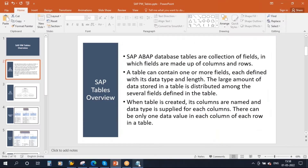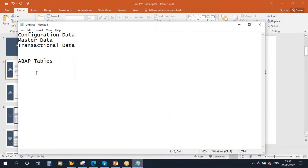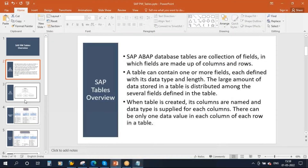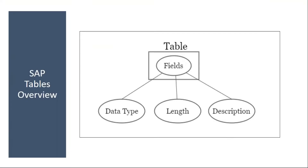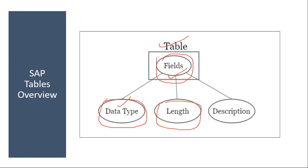We are covering today what are the standard SAP tables. The table contains fields, and each field will have its data type — whether it is numeric, alphabetic, date, or character format — and length, meaning how many characters are allowed, and then its description. I will show you these things in the system.